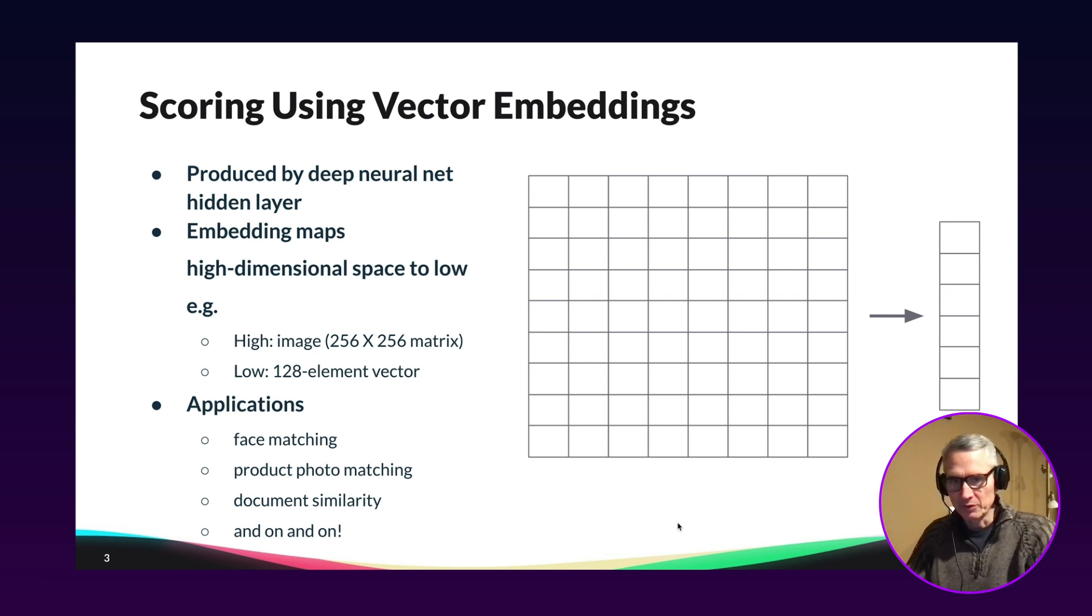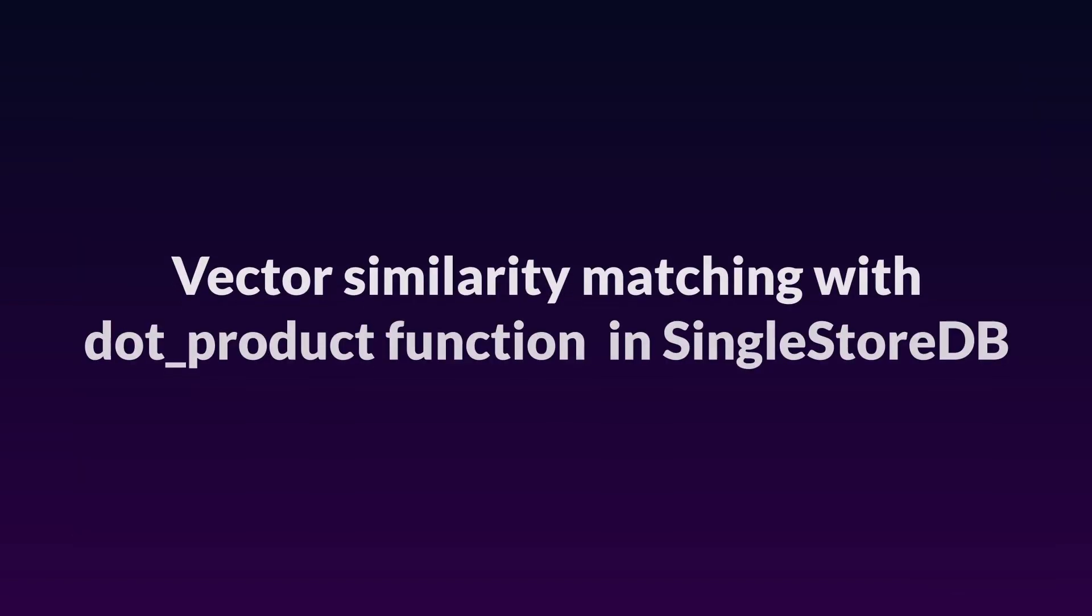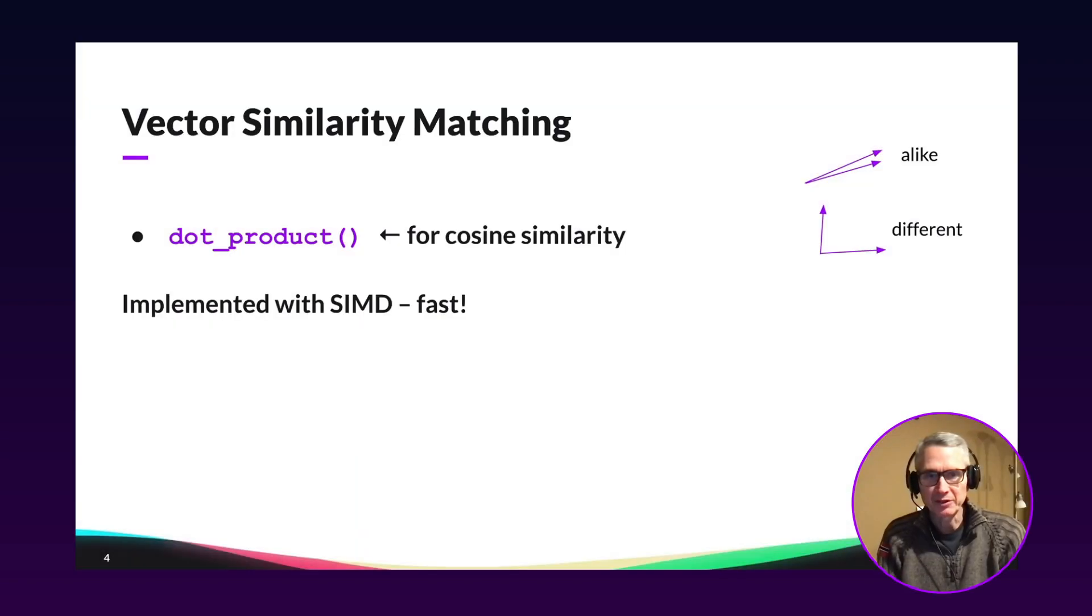And those of you with some AI background that understand this idea of vector embeddings, you may think of neat new ideas about how to apply that in SingleStore. Once you've got vector embeddings that represent the objects you're trying to match, then the question arises, how do you compare two vectors to see how alike they are?